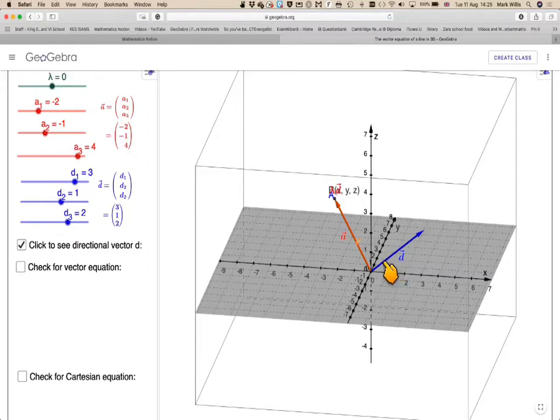So the vector equation of the line—we need to go to a point and then some multiple of that vector. If we move the slider for lambda, we see we get a set of points being mapped out here. We can see that the red vector, depending on the size of lambda, can go off the scale. We can make it go negative as well.